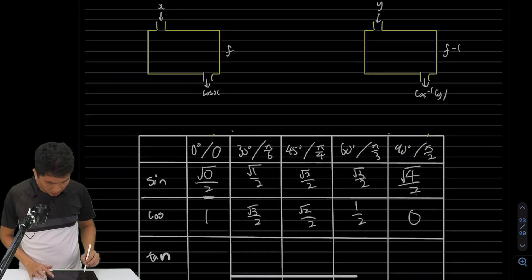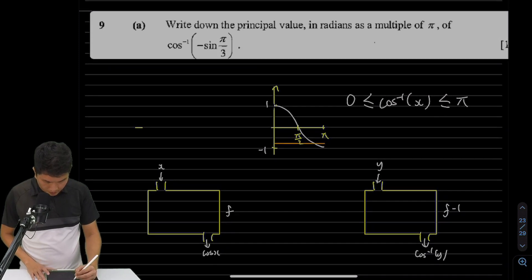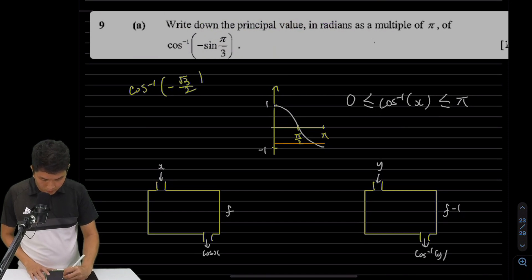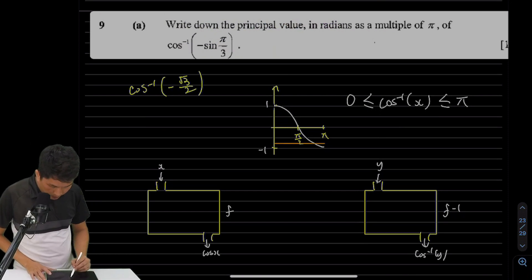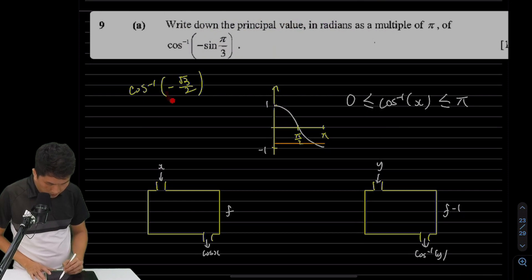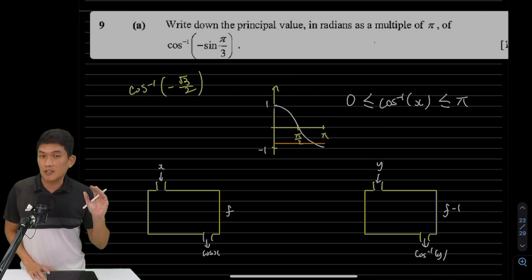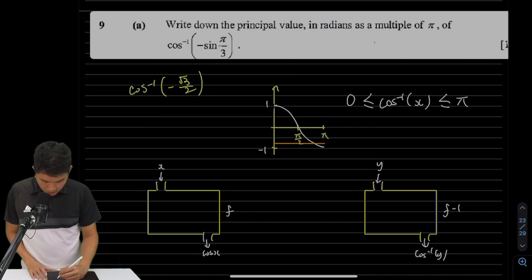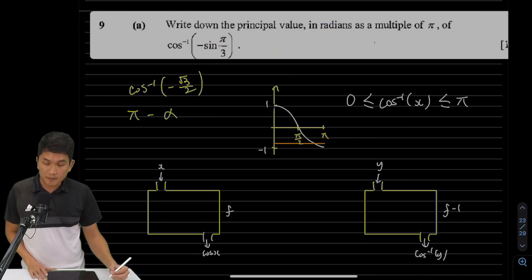So sine of π/3 is √3/2, which means the expression becomes cosine inverse of negative √3/2. Now, if I put in the y value of negative √3/2 — somewhere between 0 and negative one on the graph — what would be the x value? You can tell this is in the second quadrant.